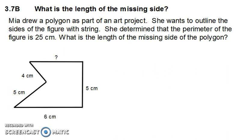In this word problem, it says Mia drew a polygon as part of an art project. She wants to outline the sides of the figure with string. She determined that the perimeter of the figure is 25 centimeters. What is the length of the missing side of the polygon?